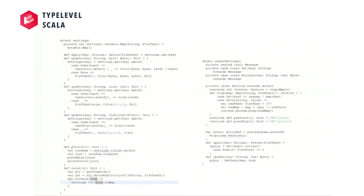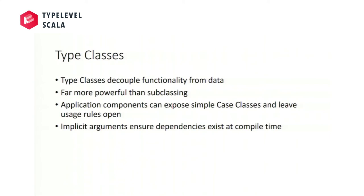The next thing I coached was type classes. They are probably the most powerful tool for decoupling your data from your functionality — way better than subclasses. If you're working with Java people, you can analogize this with comparator versus comparable. With comparable, you can only sort that object one way. If you need it sorted two different ways, you have to write two classes representing the same data and maintain both. With comparator, you just define the data in one class and have two comparators. That's the analogy I always use when dealing with type classes.